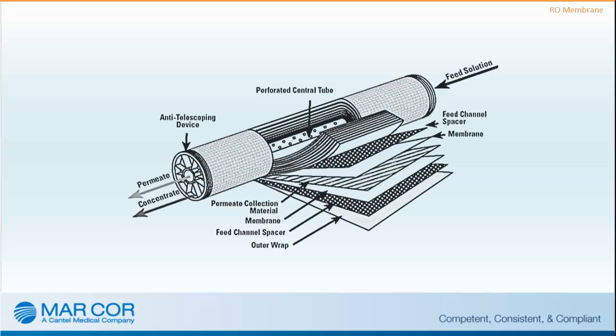The RO membrane consists of interleaved layers of spacer, membrane, and permeate or product water carriers. This spacer allows for the movement of the concentrate past the membrane, and the permeate carrier carries the purified water out of the element. The CWP unit removes at least 95% of the total dissolved salts and more than 99% of the bacteria and endotoxins from the inlet water.